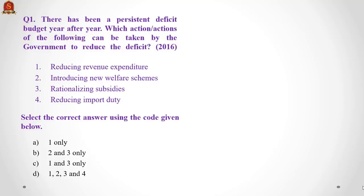The question says: there has been a persistent deficit budget year after year. Which of the following actions can be taken by the government to reduce the deficit? The situation is a persistent deficit budget, meaning the government does not have enough money. Our answer logically should not include anything which increases government expenditure. Reducing revenue expenditure seems very logical. If you introduce new schemes, that will be greater expenditure and the deficit will widen even further, so that gets eliminated.